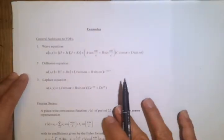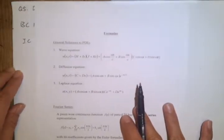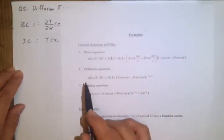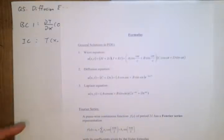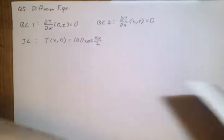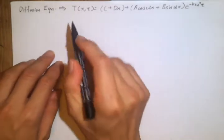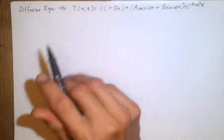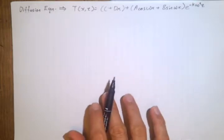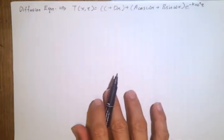There's only one difference here. The question is given to you in terms of big T, not small u. So when you copy down the general solution, just make sure you write big T here instead of small u. This is the general solution to the diffusion equation.